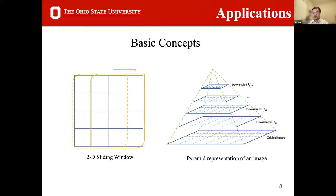Before describing the system design, the presentation walks through the supported applications and introduces common concepts. In target detection, a detection window slides across an image by a fixed step, and the detection algorithm runs in each window. To detect targets of different scales, the image is downsampled at multiple levels, forming a pyramid shape, and detection is executed at each level of the pyramid.